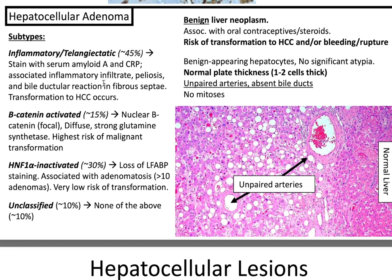Beta-catenin activated subtype makes up around 15% of hepatocellular adenomas. This has nuclear beta-catenin, although focal, and diffuse strong glutamine synthetase. This has the highest risk of malignant transformation to hepatocellular carcinoma. Next, HNF1-alpha inactivated makes up around 30%; you'll have loss of LFABP staining, and it's associated with adenomatosis where you'll have greater than 10 adenomas, with a very low risk of transformation. Lastly, unclassified makes up around 10% and is none of the above.